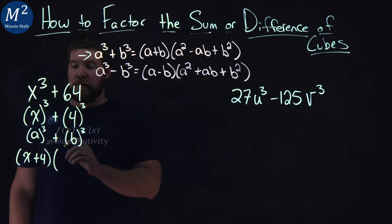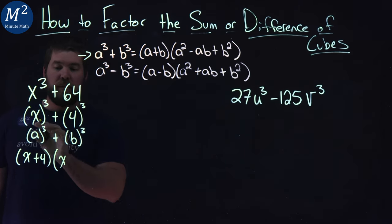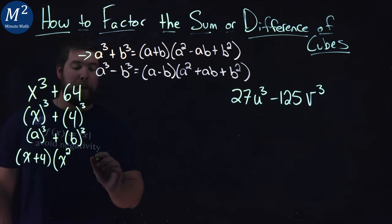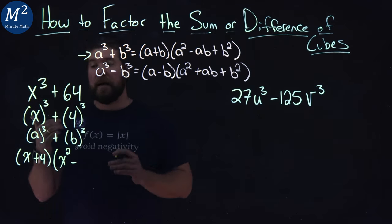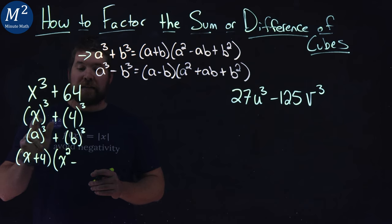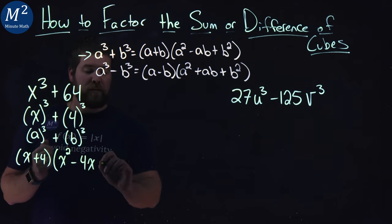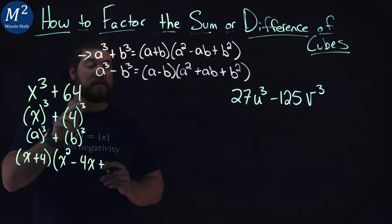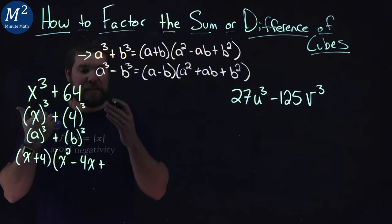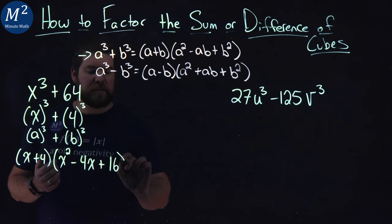Then keep on going. We have a squared so we take our x value which is a we square it not too bad minus an a times a b so x times a 4 or a 4x if you will.